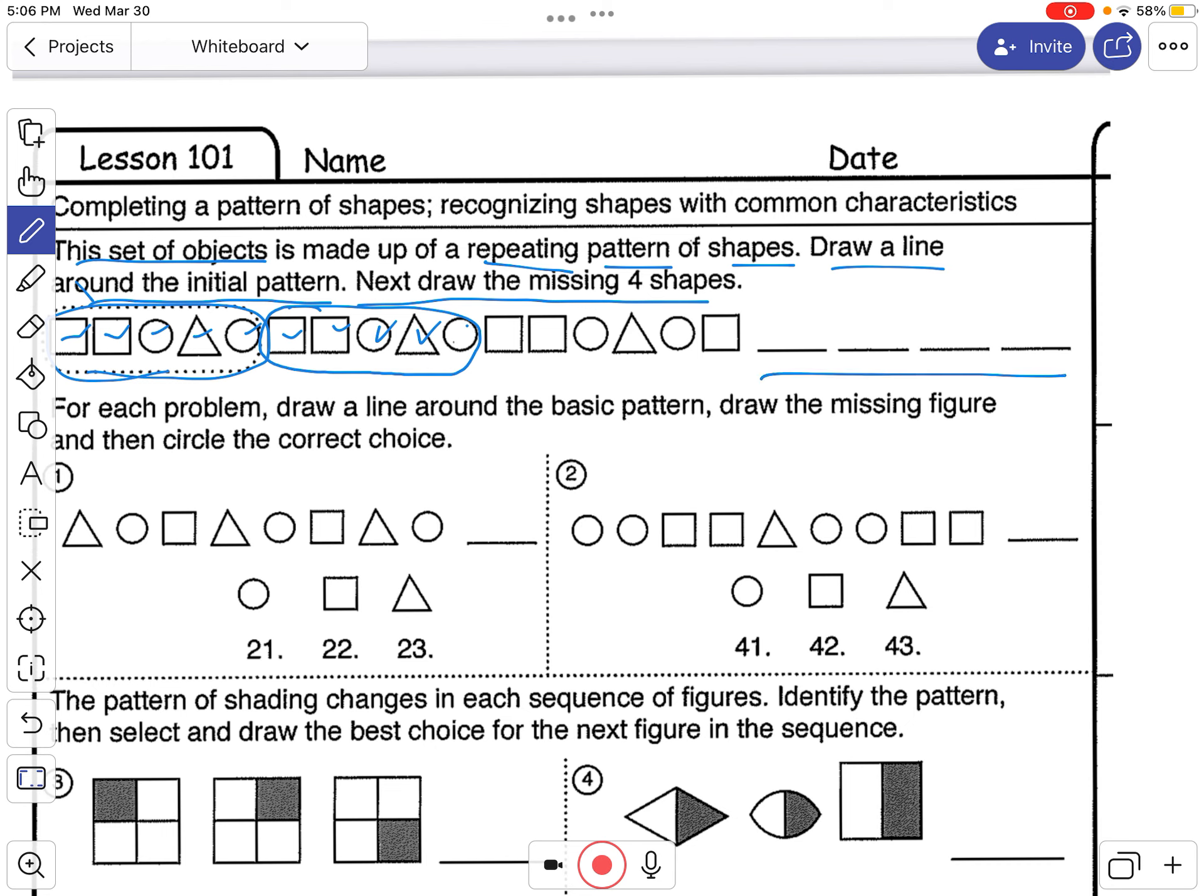Pause the video, turn it back on when you're ready to see the solution. So you should have already drawn a circle around this. Square, square, circle, triangle, circle. And then the next part would be a brand new one. Square, square, circle, triangle, circle. Fix your paper if you got it wrong.